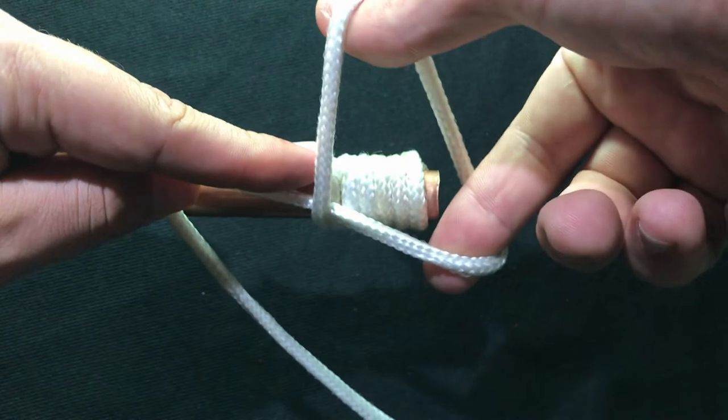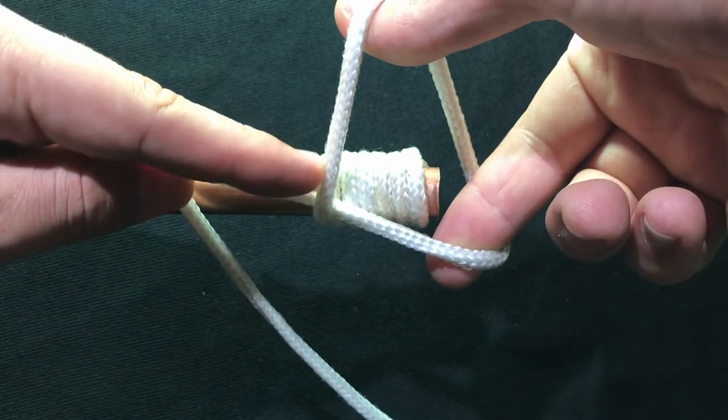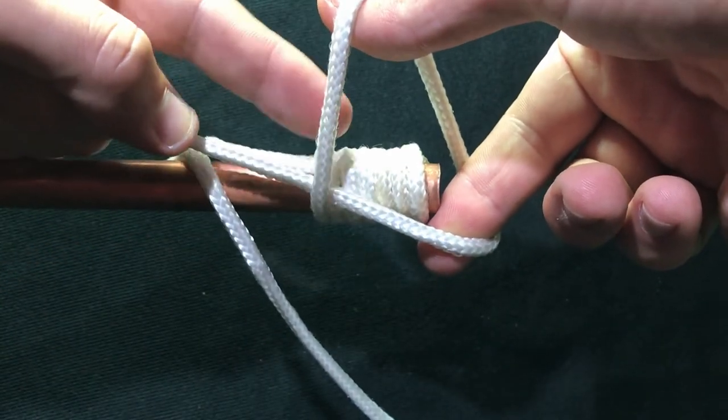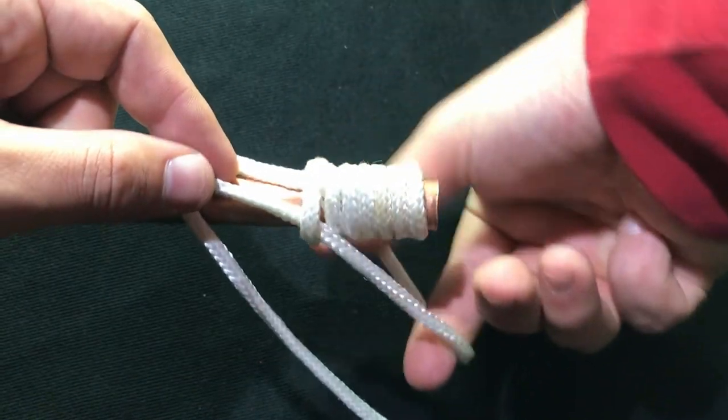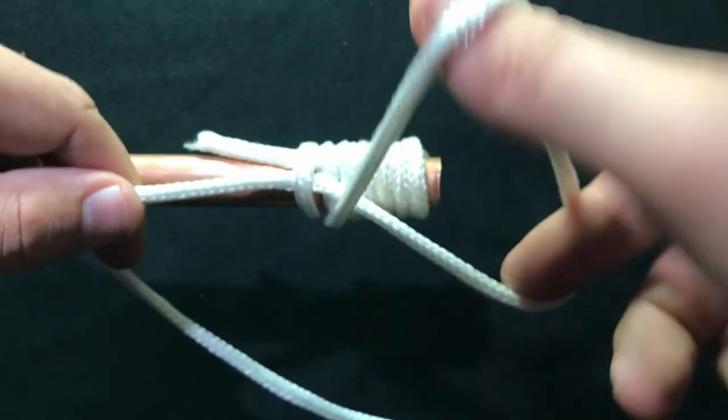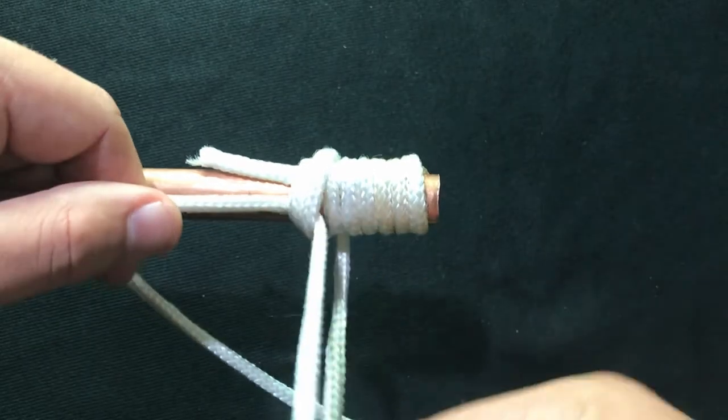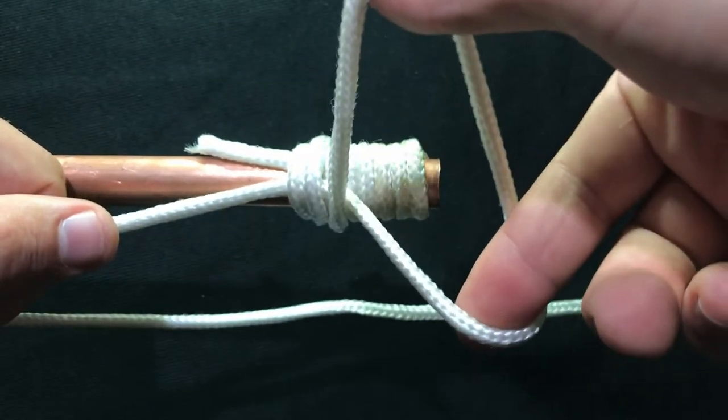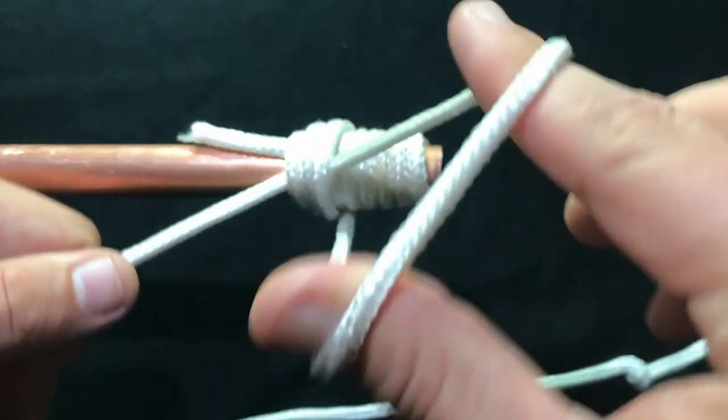What you're going to notice is there's a section of rope that's perpendicular to the pipe and a section that's parallel to the pipe. As I begin making wraps, you're going to notice that perpendicular section is being wrapped around the parallel section. I'm going to make about four or five wraps. That's what I normally do on flies.